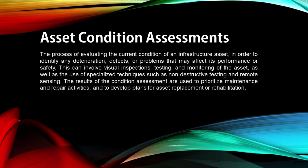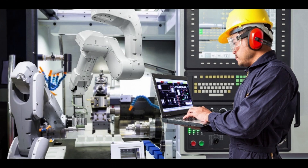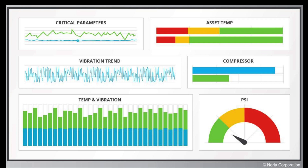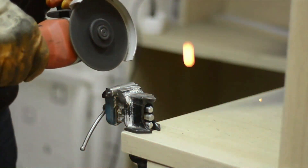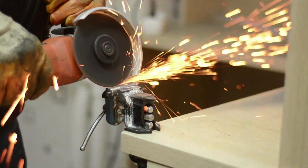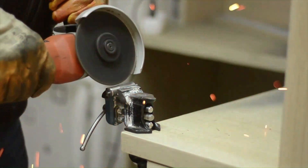Asset condition assessment is the process of evaluating the current condition of an infrastructure asset in order to identify any deterioration, defects, or problems that may affect its performance or safety. This can involve visual inspections, testing, and monitoring of the asset, as well as the use of specialized techniques such as non-destructive testing and remote sensing. The results of the condition assessment are used to prioritize maintenance and repair activities and to develop plans for asset replacement or rehabilitation.